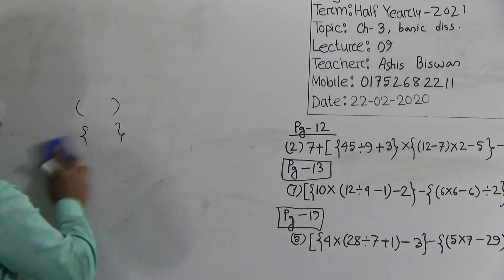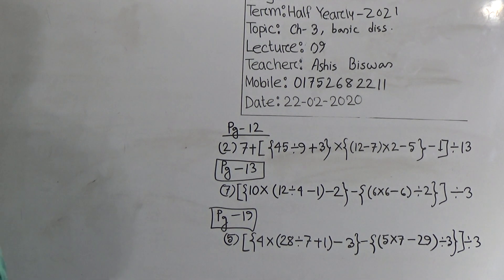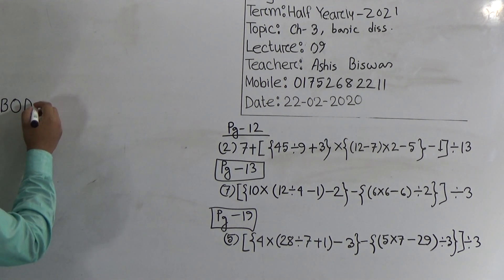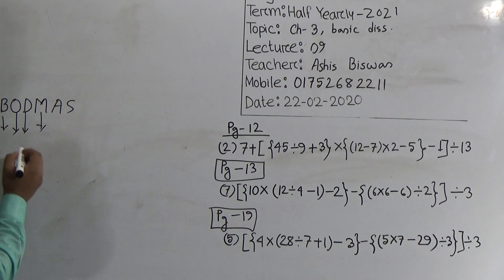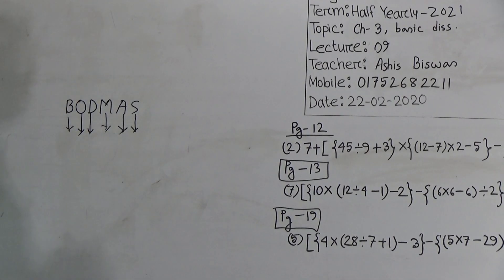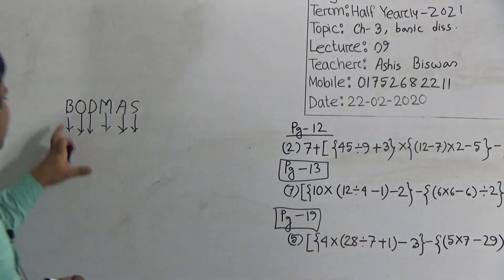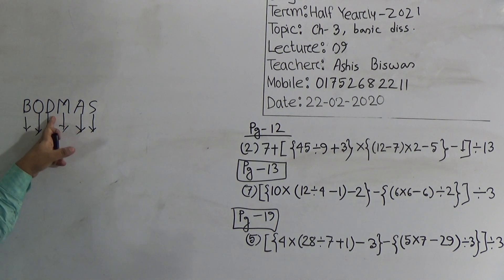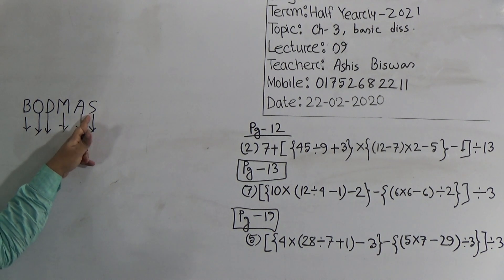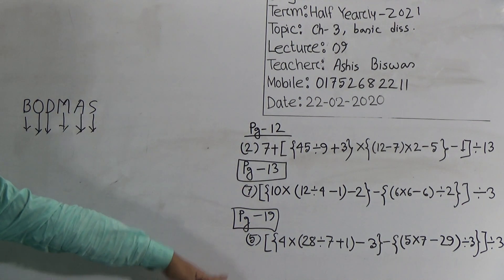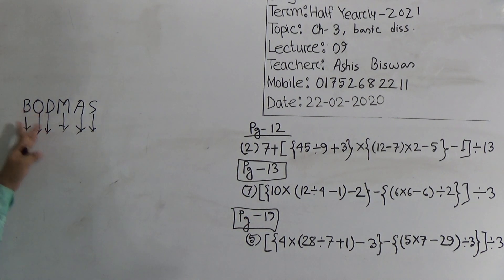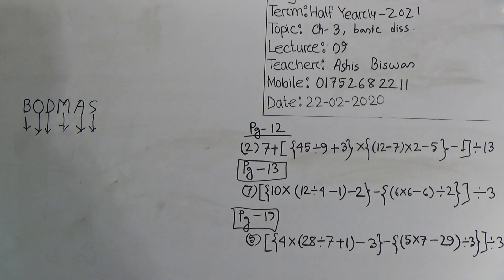In order to solve this type of simplification, we follow the word BODMAS. B for Bracket, O for Of, D for Division, M for Multiplication, A for Addition, S for Subtraction. So in this type of simplification, at first we do the work of Bracket, then Of, then Division, then Multiplication, then Addition, and last Subtraction. We memorize 'BODMAS' — when doing such simplification, we follow this order.